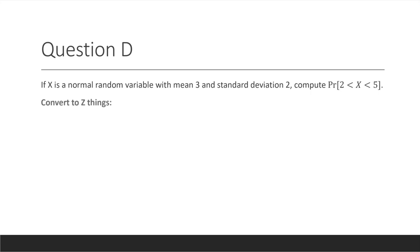Our first step is to convert this into z things. Well, from what we're told, we just need to turn the 2 and the 5 into z scores.